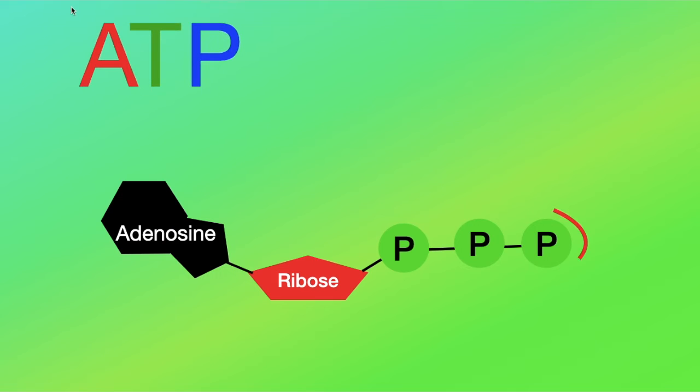ATP is basically adenosine triphosphate. The most important part of the ATP are these three phosphate groups in triphosphate.